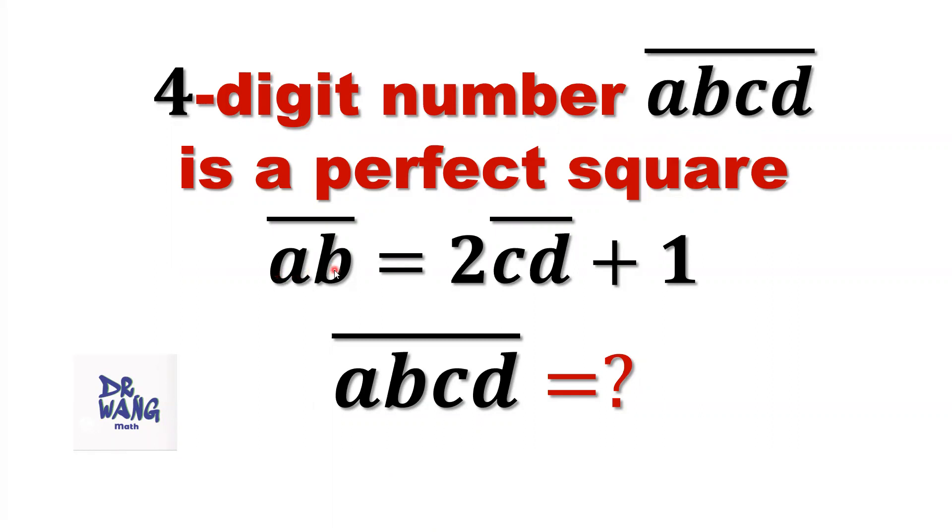The first two digits form the number AB equals two times the last two digits form the number, plus one. What is the four-digit number ABCD?